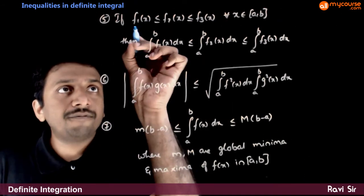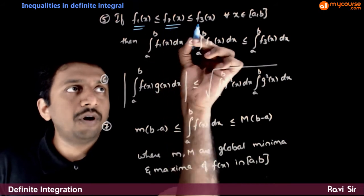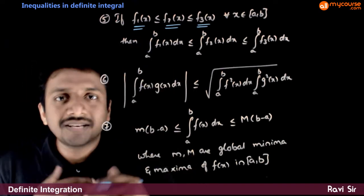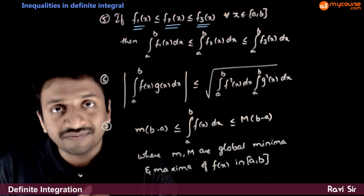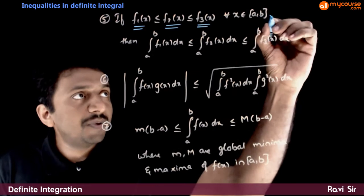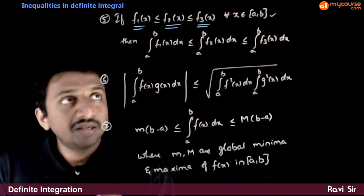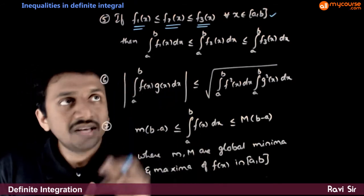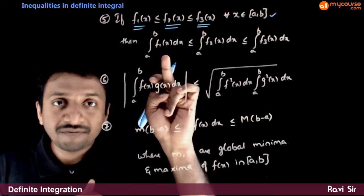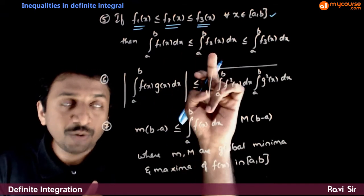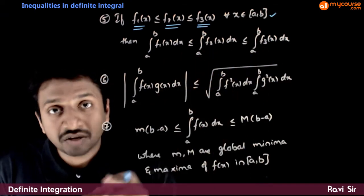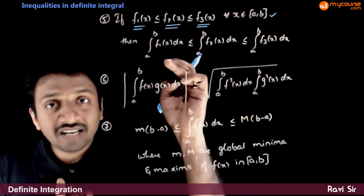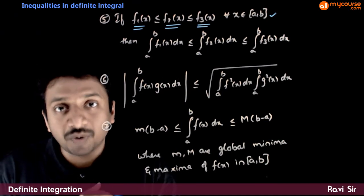Next, if you have functions f1(x), f2(x), f3(x) satisfying the condition that f1(x) is always less than or equal to f2(x), which is always less than or equal to f3(x), for all x in [a, b] — so f1 is always on the lower side than f2(x) than f3(x) — then the integrations from a to b of f1(x)dx, f2(x)dx, and f3(x)dx also follow the same order. So if f1 is small, the integration of f1 from a to b will also be small, and so on.